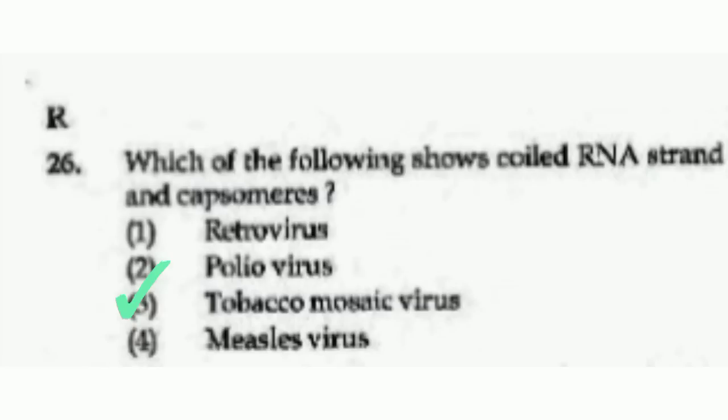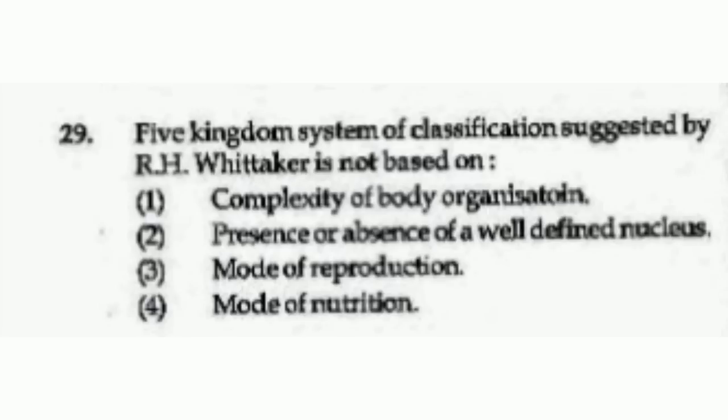The Five Kingdoms system of classification suggested by R.H. Whittaker is not based on — options are complexity of body organization; presence or absence of a well-defined nucleus; mode of reproduction; or mode of nutrition. The right answer is option number 2, Presence or absence of a well-defined nucleus.